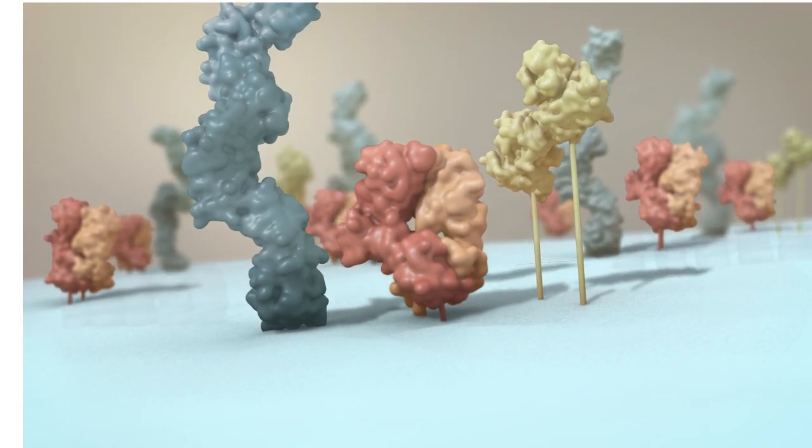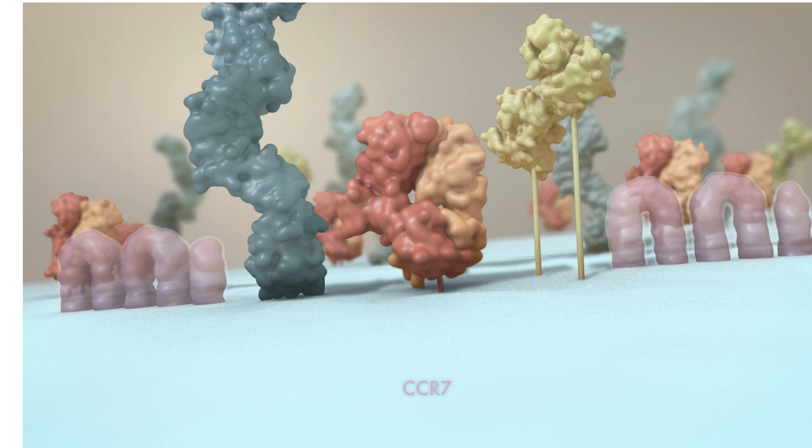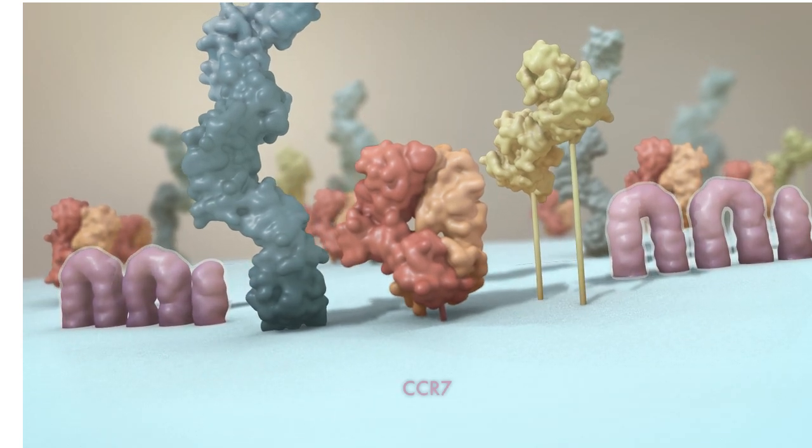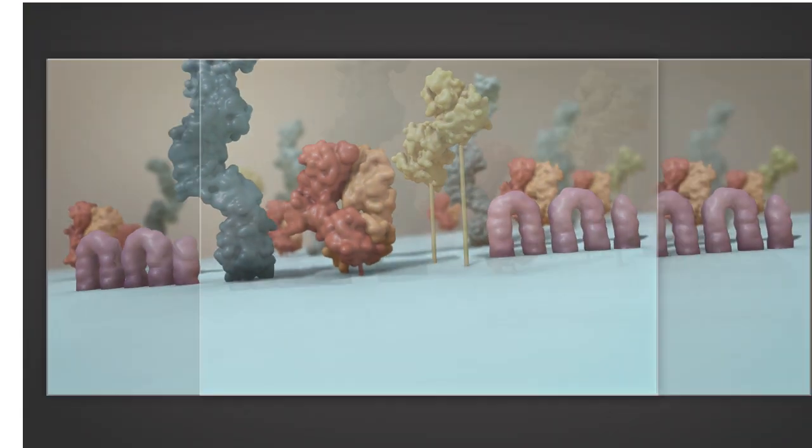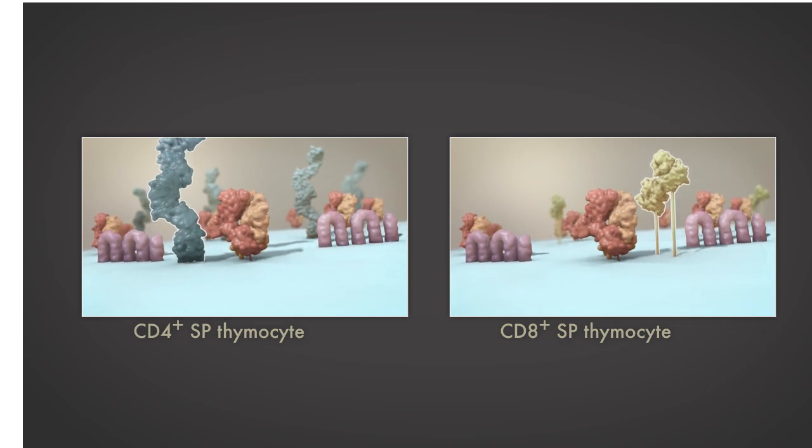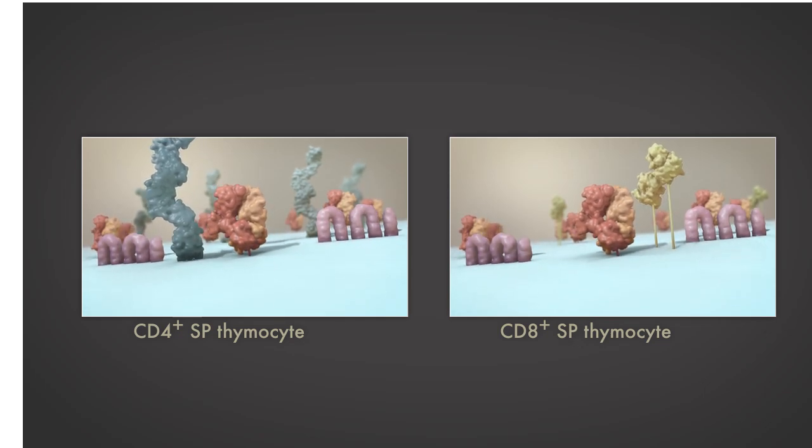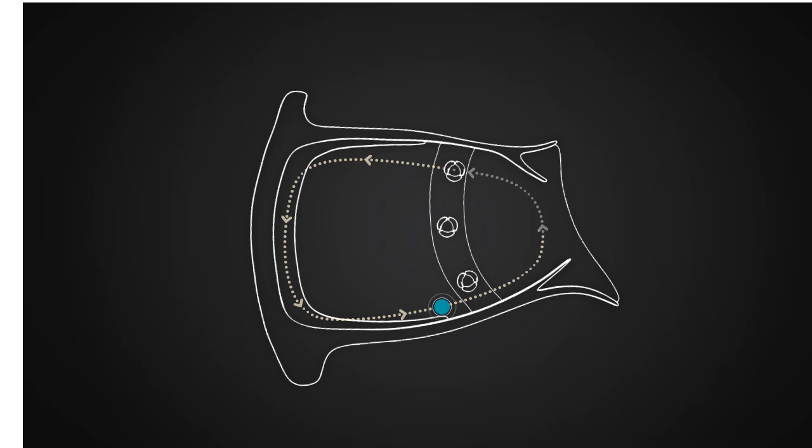Successful positively selected DP thymocytes gain expression of CCR7 and differentiate into CD4 and CD8 single positive, or SP thymocytes, through which cells are attracted to the medulla.